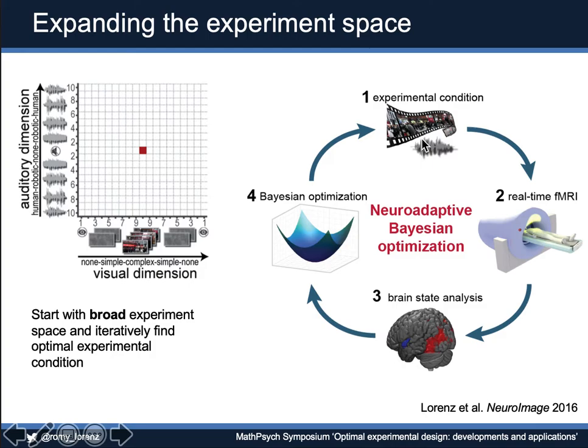You would start randomly with a condition, show this condition to the subject lying in the scanner, analyze brain data in real time, and then try to optimize for a certain target brain state — for example, optimize activation in a certain brain network. Based on the signal you're getting from the fMRI, your algorithm will propose where to sample next. That makes it completely closed-loop.